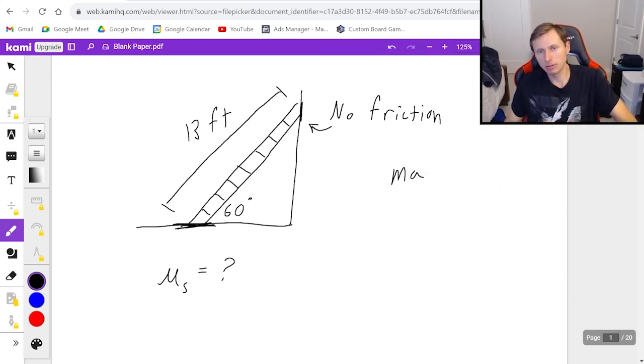Let's say the mass of the ladder is eight kilograms. My question is, what does the coefficient of friction have to be for this ladder to not slide?